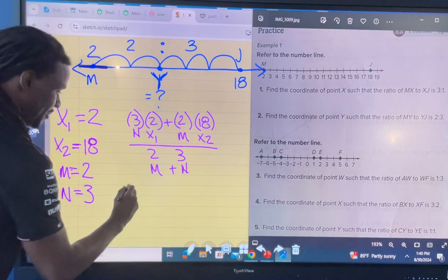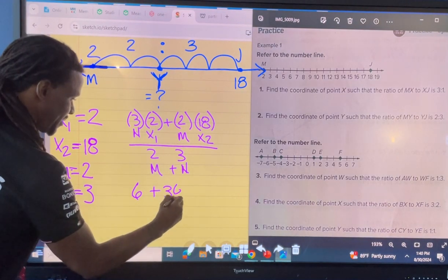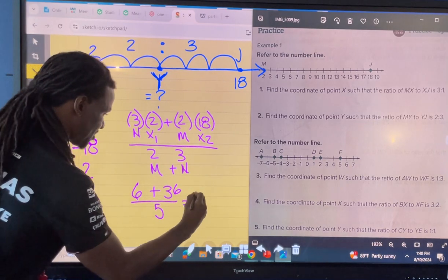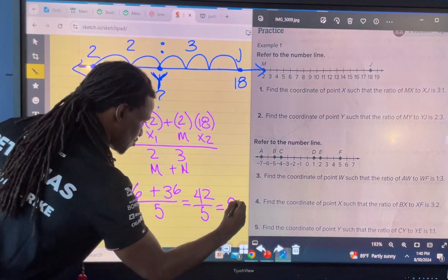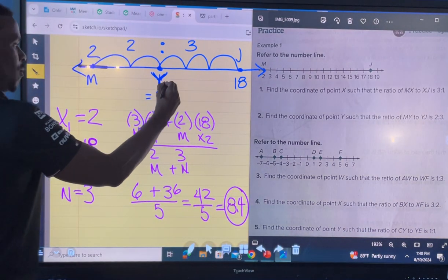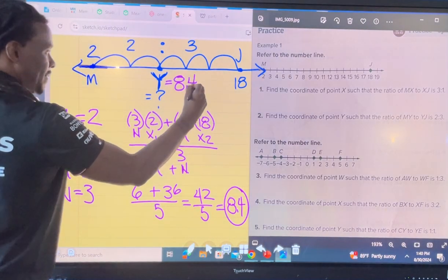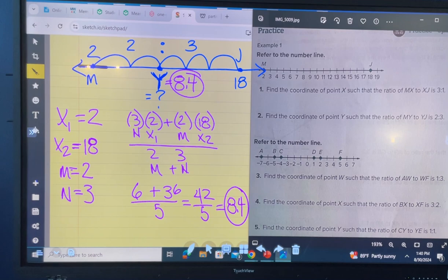You remember that formula? You're supposed to have N times X1, so that gives me 3 times 2. N times X1 plus the M value, which is 2, times X2, which is 18. And we're dividing that all by M plus N. Got it laid out for you. My answer: 3 and 2 makes 6 plus 36, divide by 5, which gives you 42 over 5, 8.4. That means the value of Y on this number line is 8.4. Yes, it's a decimal. That's okay if it is.